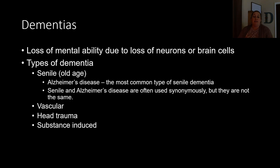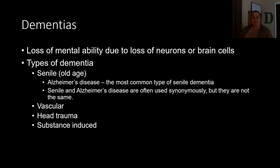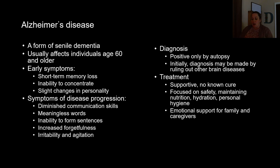Dementias are a loss of mental ability due to loss of neurons or brain cells, and once those are lost they don't grow back. There are different types: senile or old age dementia, with Alzheimer's being the most common type. There is also vascular dementia, head trauma dementia, and substance-induced dementia.